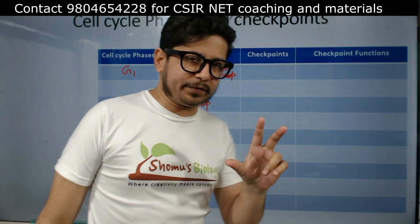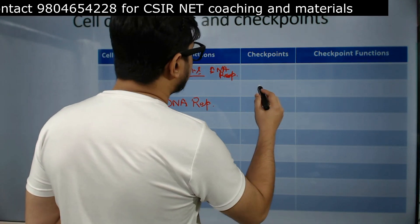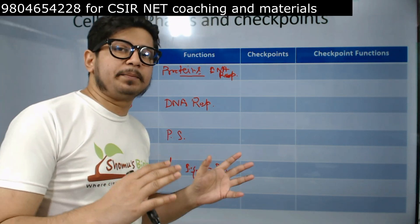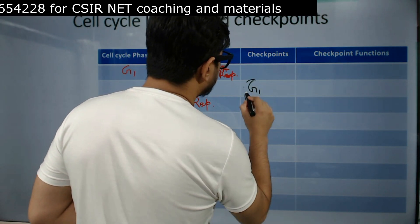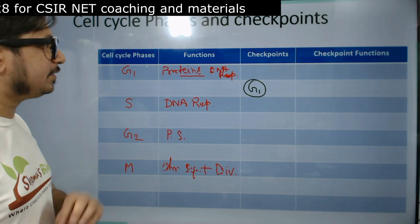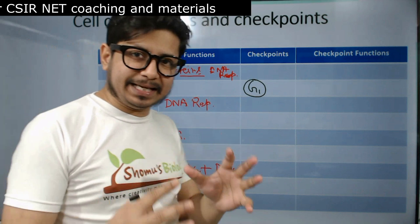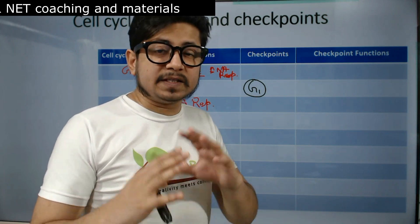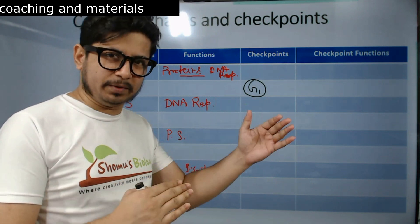Now I'll take a different color and explain the function of different checkpoints. I left gaps between the phases because checkpoints are present between phases. The first checkpoint is the G1 checkpoint, present between G1 and S phase. This checkpoint is very crucial — it checks whether the cell is of appropriate size and ready for cell division. If not, it will prevent the cell from moving from G1 to S phase.